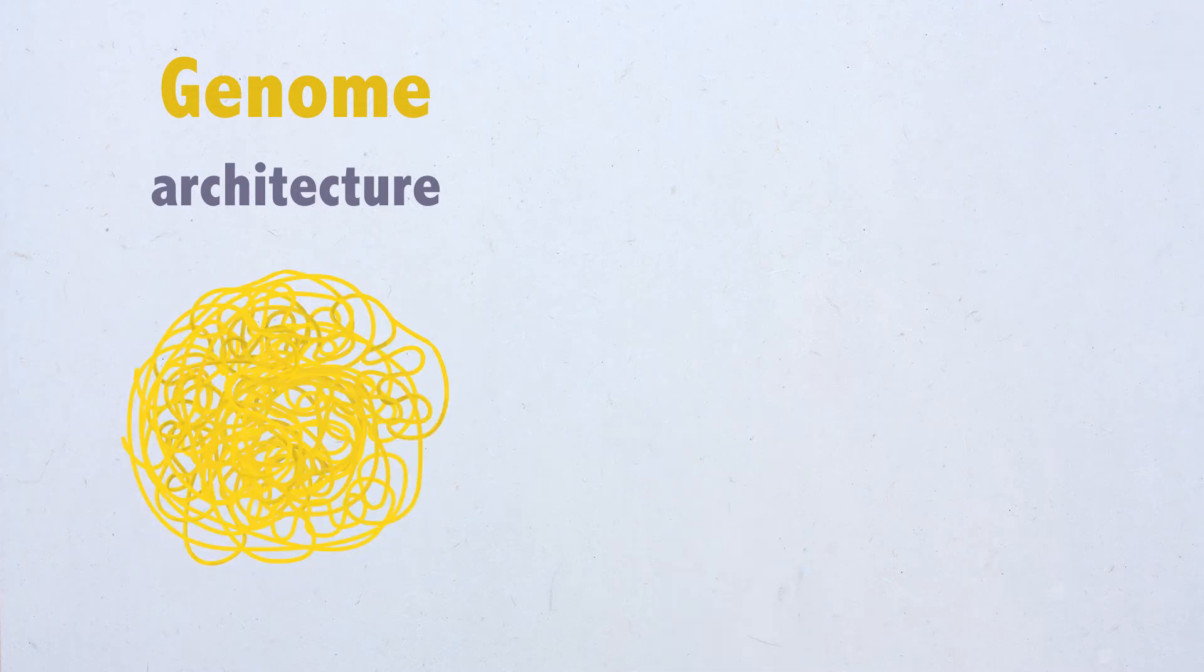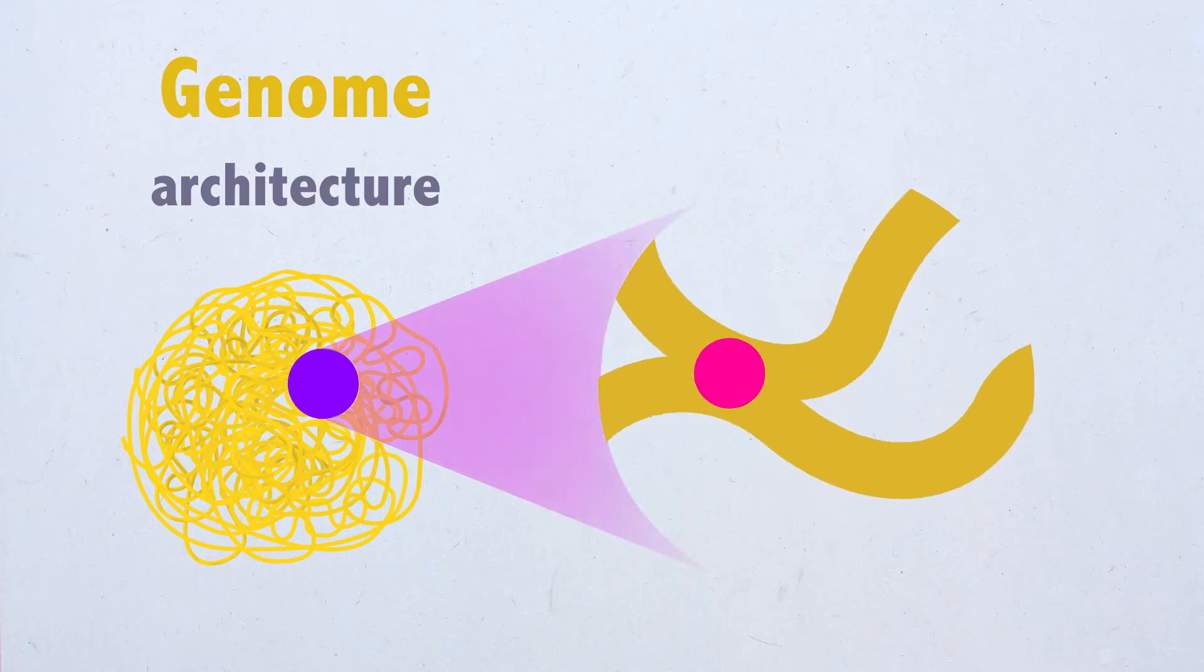Regulatory interactions between specific regions determine whether genes will be activated or repressed and thus are crucial to establish and maintain cell identity during development.